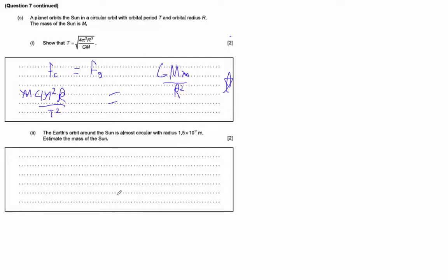Well, the period is going to be 365 and a quarter days. So it's 365.25, but it's not quite a quarter. 2.4, is it 2.4? Times 24 hours a day times 3,600 seconds.